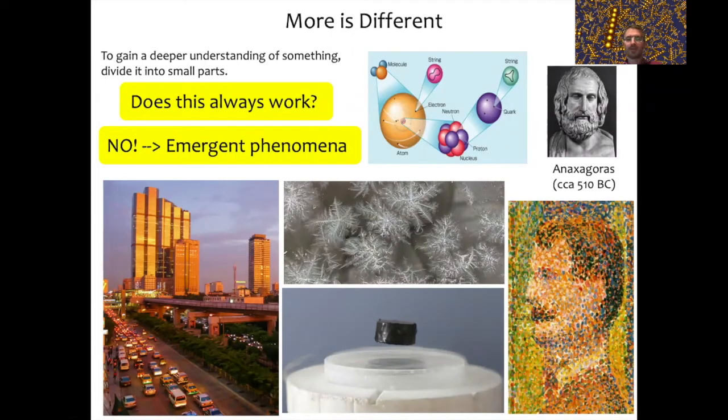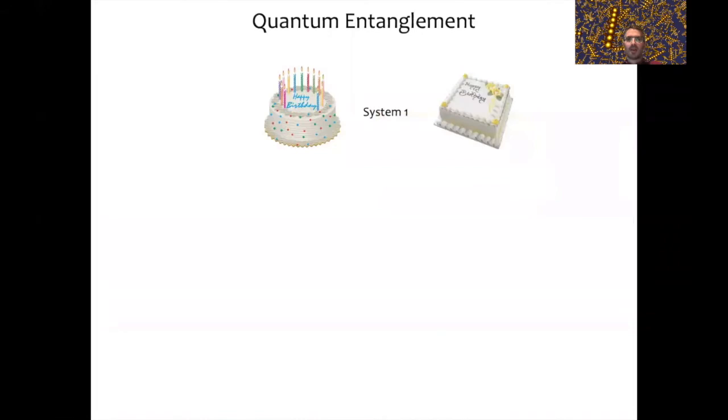Let's illustrate this idea that more is different using an example from quantum physics. The example is quantum entanglement, which is one phenomenon that cannot be described by a reductionist approach. We will illustrate this using a very simple idea of a system of two cakes. System number one consists of a cake that can be in two possible shapes, either a round cake or a square cake. We have another such system, another cake which can be square or round.